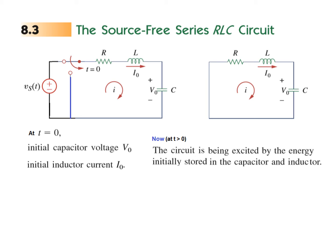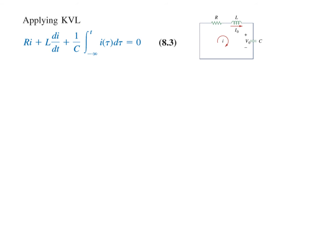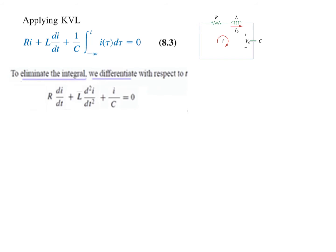At T greater than zero, the circuit is excited by the energy initially stored in the capacitor and inductor. We can write the KVL equation as: R·i + L·di/dt + the voltage across the capacitor equals zero. This is the KVL equation. To eliminate the integral, we differentiate the equation one more time.